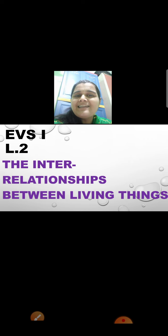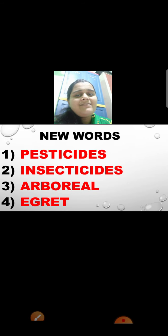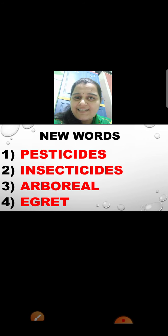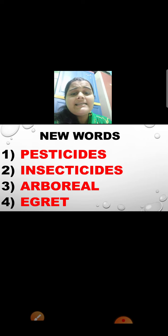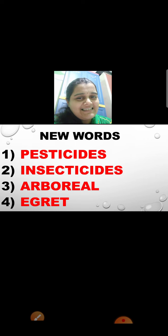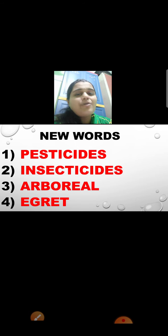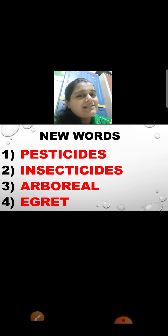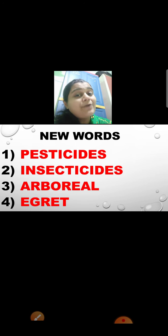And what do we do before we start the video? We learn the new words. So let us learn the new words. Can you see the first one? P-E-S-T-I-C-I-D-E-S — Pesticides. And see the second one also: I-N-S-E-C-T-I-C-I-D-E-S — Insecticides. Now pesticides and insecticides are both a kind of medicine which are sprayed on plants to protect them from insects, worms and other dangerous things which affect and destroy the plants. So when these medicines are sprayed on the plants, it protects the plant.